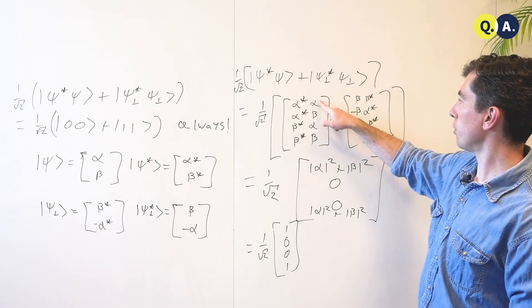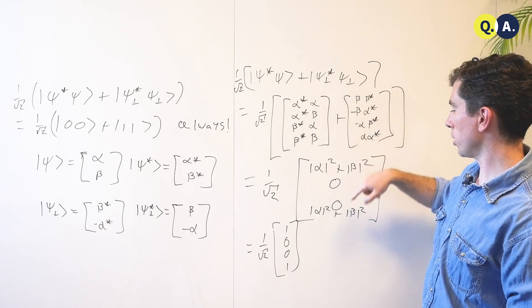And we see the same thing in the top term here, alpha star alpha plus beta beta star, that's 1.